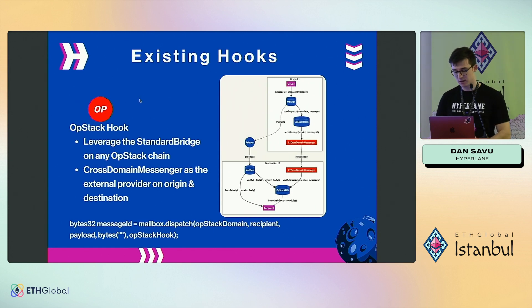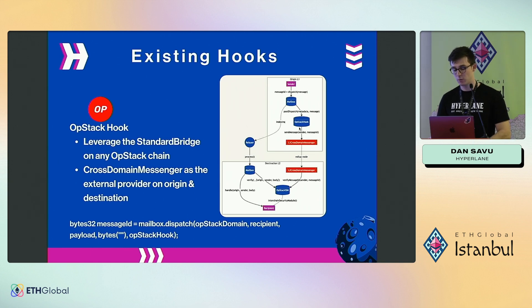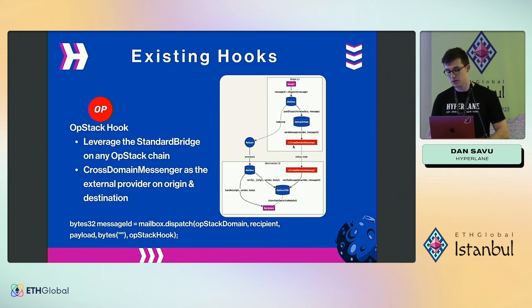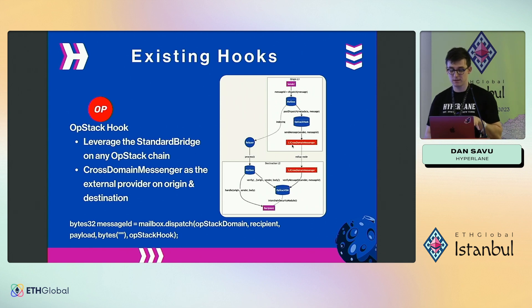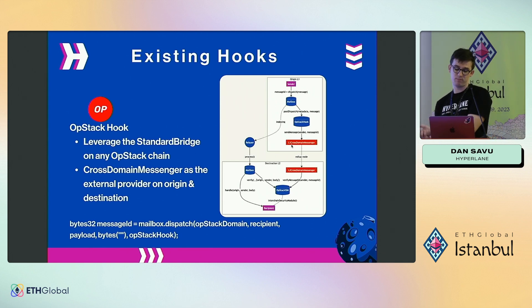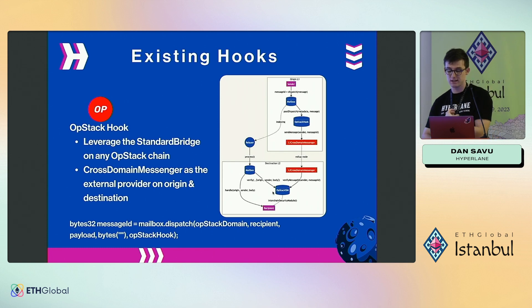As an example of a hook we've already implemented: the OP Stack hook. The diagram looks exactly the same. We have the OP Stack hook on the origin chain that abstracts over interactions with the L1 CrossDomainMessenger of the OP Stack, and then the OP Stack ISM which acts as a receiver from the L2 CrossDomainMessenger.